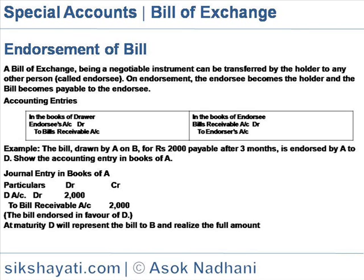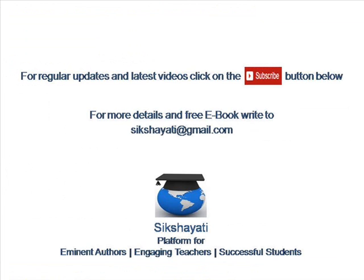Example: A bill drawn by A on B for Rs. 2000, payable after three months, is endorsed by A to D. The accounting entry in books of A — journal entry: D account debit 2000 to bills receivable account 2000; the bill endorsed in favor of D. At maturity, D will present the bill to B and realize the full amount.